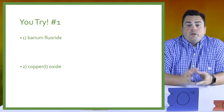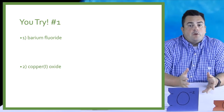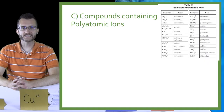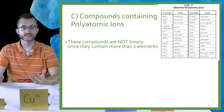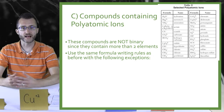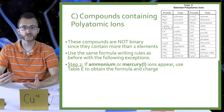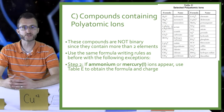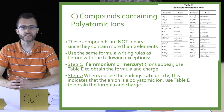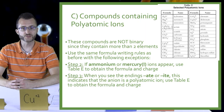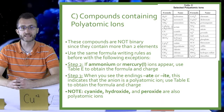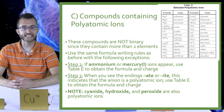You try number one — for the following two compounds, please write out their chemical formulas. Remember, if you're not looking up their charges on your periodic table, you're doing it wrong. Compounds containing polyatomic ions: these compounds are not binary since they contain more than two elements. Use the same formula writing rules as before with the following exceptions. Step two: if ammonium or mercury(I) ions appear, use Table E to obtain the formula and charge. Step three: when you see the ending -ate or -ite, this indicates that the anion is a polyatomic ion — use Table E again to obtain the formula and charge. Cyanide, hydroxide, and peroxide are also polyatomic ions despite ending in -ide.